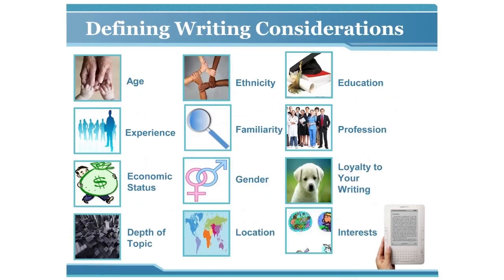The best way to do this is to create a checklist of the main points and considerations you must take before putting your ebook together. The following is a list of considerations that will help in determining the nature and depth of content you'll need. However, it's up to you to decide which ones are relevant depending on your subject niche: age, background, experience, depth of topic, economic status, education, ethnicity, gender, location, and profession.